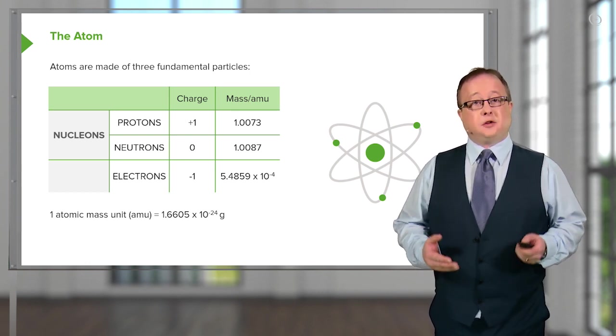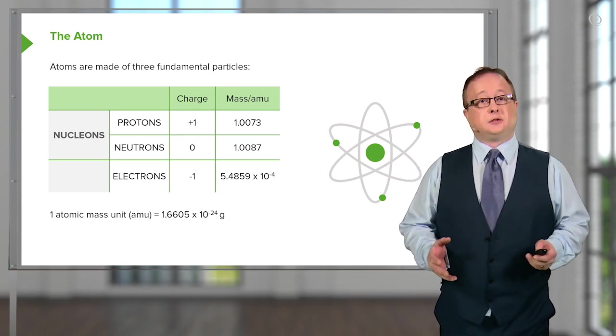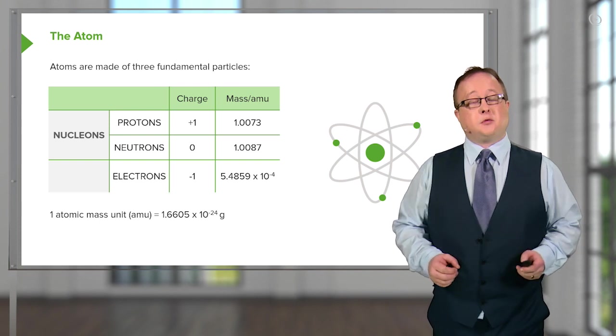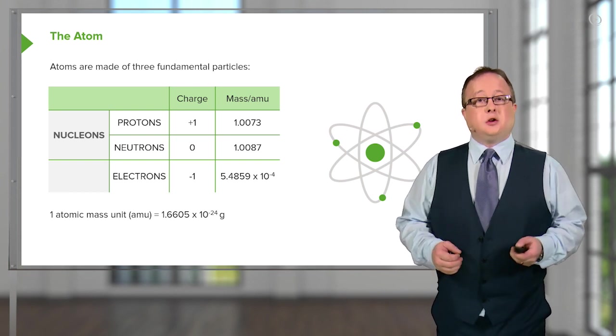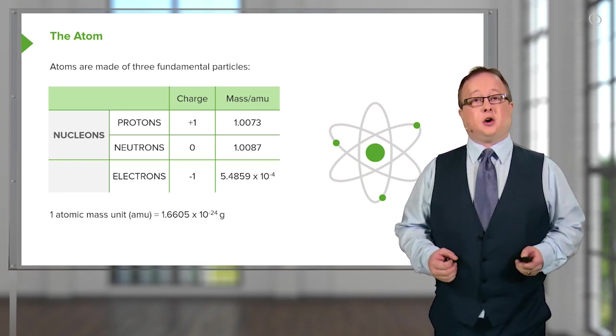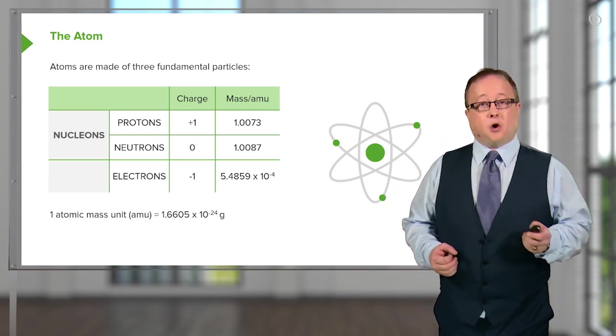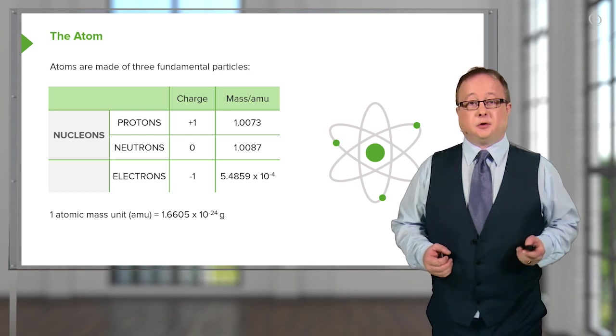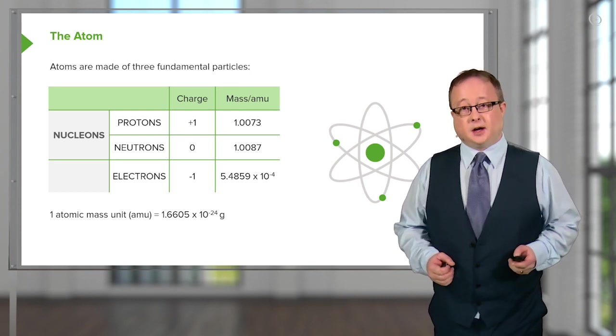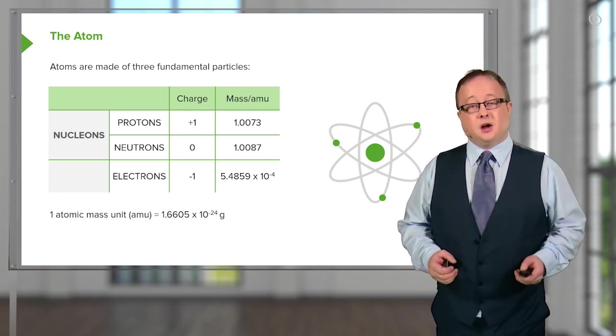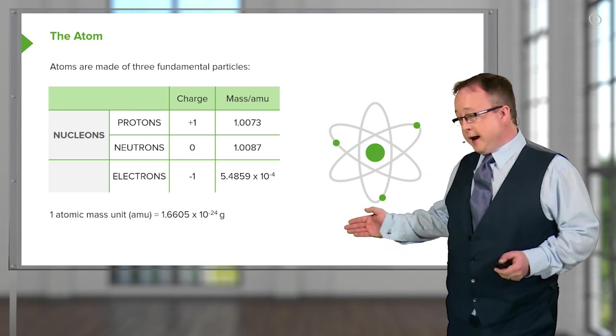The proton and the neutron are both nucleons. That is to say, they are subatomic particles which reside within the nucleus of an atom. Protons have a charge of plus one. Neutrons have a charge of zero. And they both have a mass of one atomic unit. One atomic unit, as you can see at the bottom of the board, is given as 1.67 times 10 to the minus 24 grams. And what is worthy of note, if you look at the table, is the third entry, the electron.